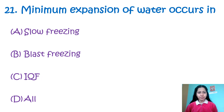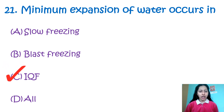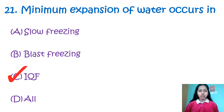Question 21: Minimum expansion of water occurs in — option A: slow freezing, B: blast freezing, C: IQF, D: oil. The minimum expansion of water occurs at IQF — that is option C. IQF stands for Individual Quick Freezing, a method in which food is frozen very quickly and individually.